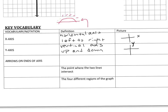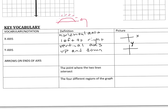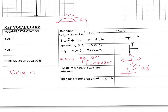The reason we have arrows on the end of the axes is because our axes go on forever. Our graph has to be a certain size to fit on the page, but the numbers could go on forever in every direction. So the arrows signify that the axes go on forever. The point where the two lines intersect is called the origin — that middle point at zero, zero.